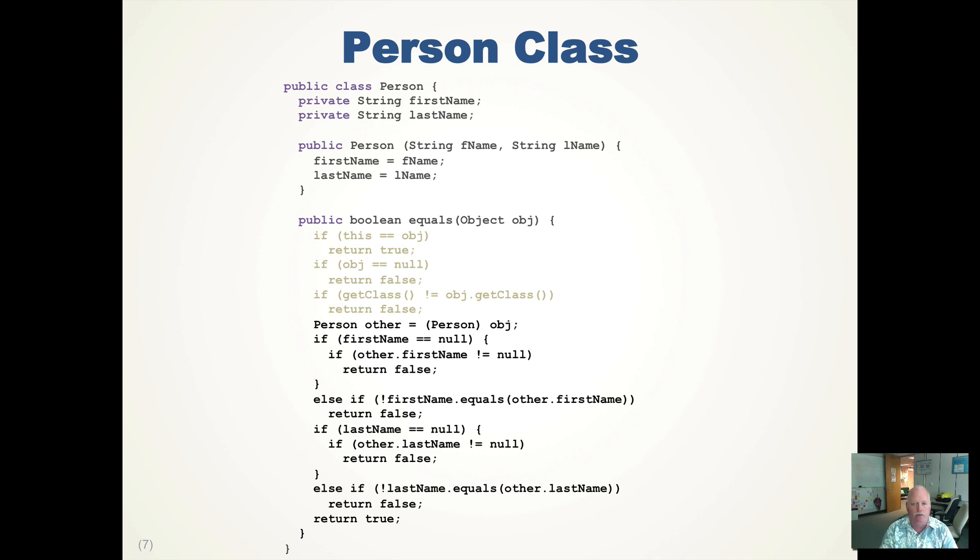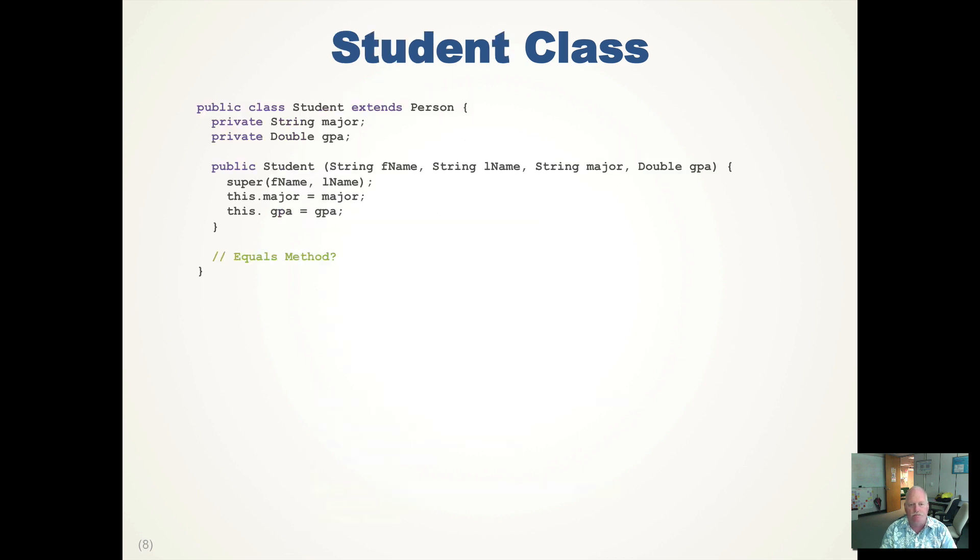So now let's take a look at the student class. Student extends person. It adds a major and a GPA. The constructor, like we talked about in a previous screencast, we need to have all the information for a student. So we need to know the student's first name, their last name, their major, and their GPA. So we can call super given the first name and the last name. We assign our majors, we assign our GPA, and now what are we going to do about the equals method?